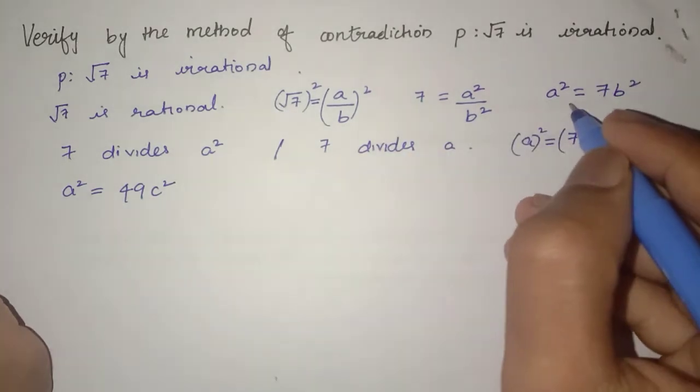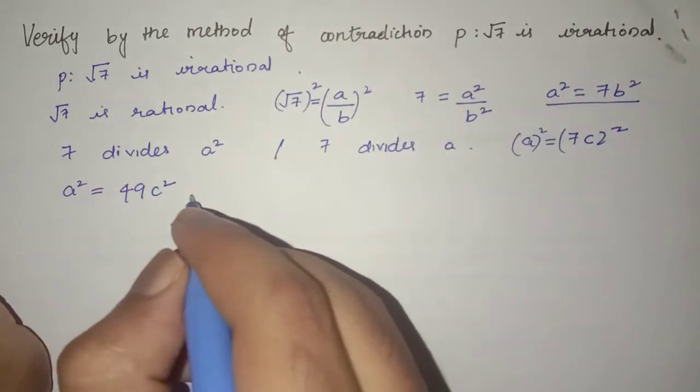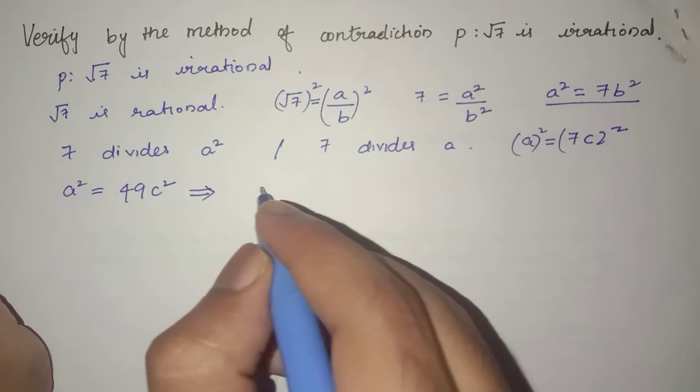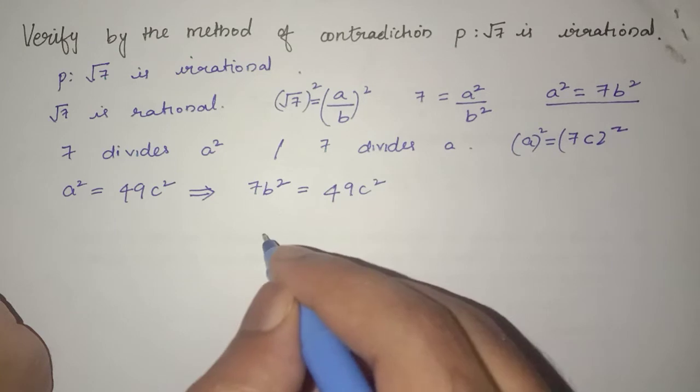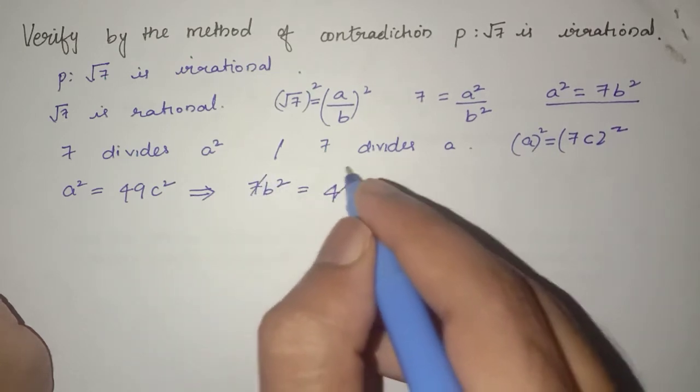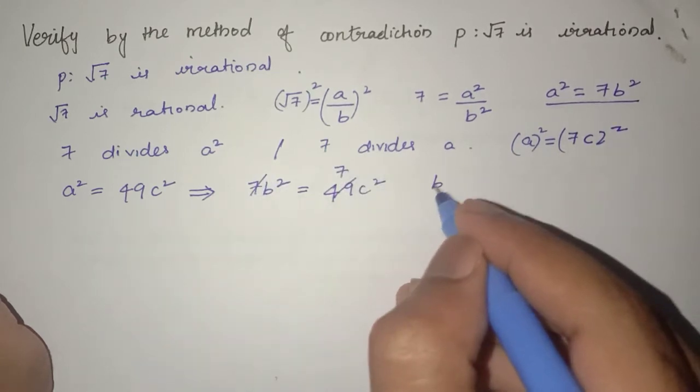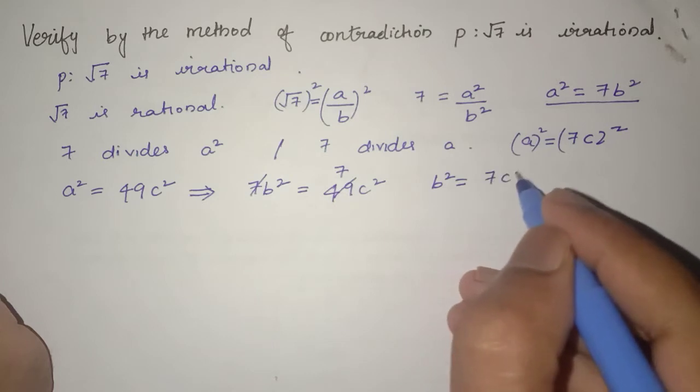We have already found that A² = 7B². Substituting this, we get 7B² = 49C². Simplifying, we get B² = 7C².